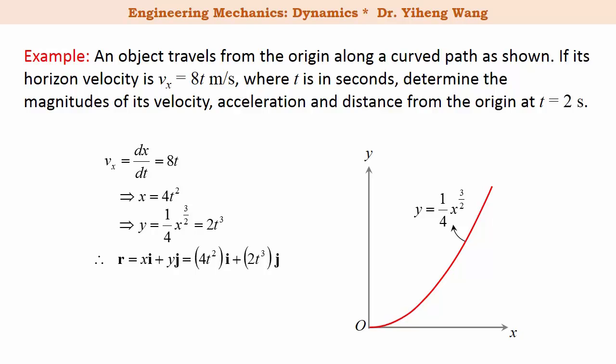From differentiation, since v equals to dr dt, the velocity vector equals to eight t i plus six t squared j. And do the differentiation again, the acceleration equals to dv over dt equals to eight i plus twelve t j.